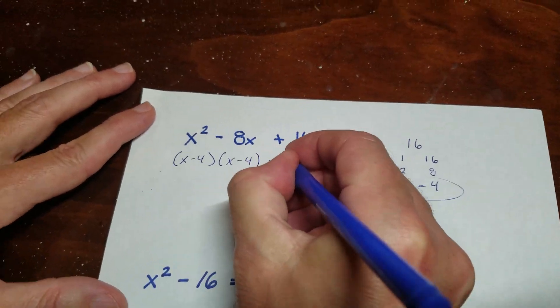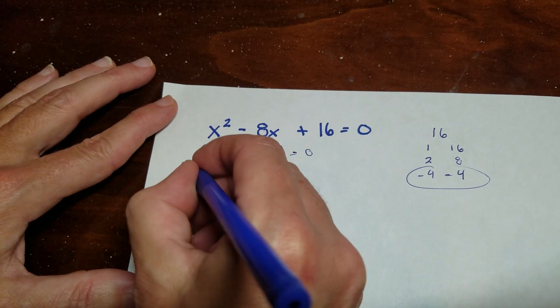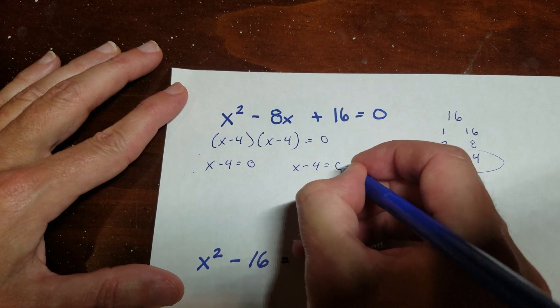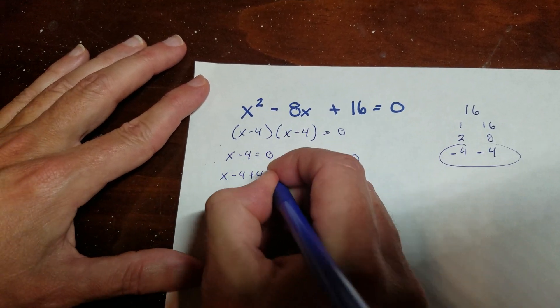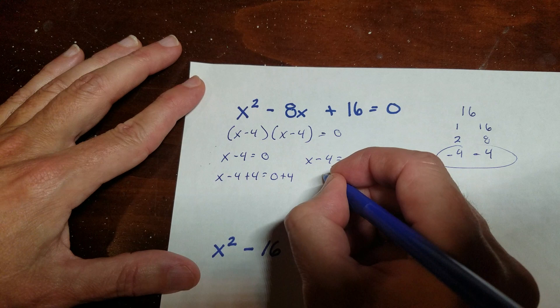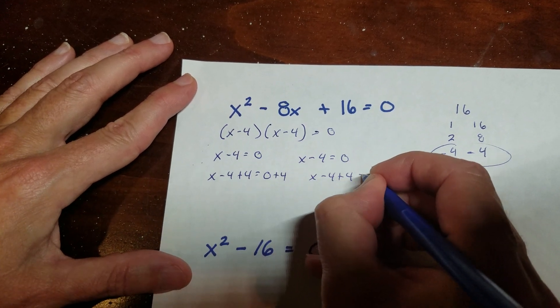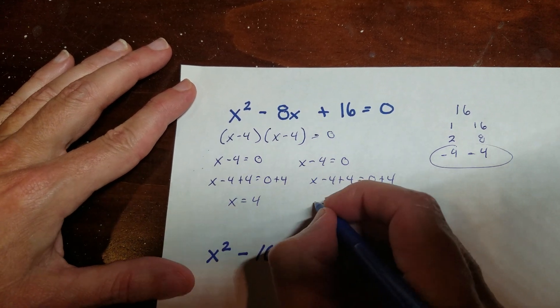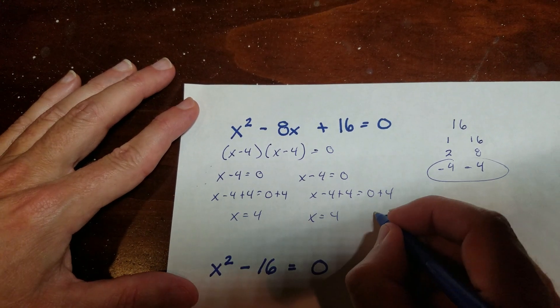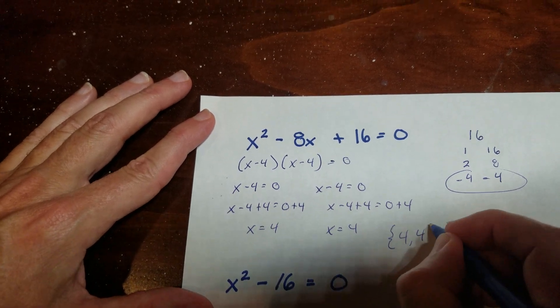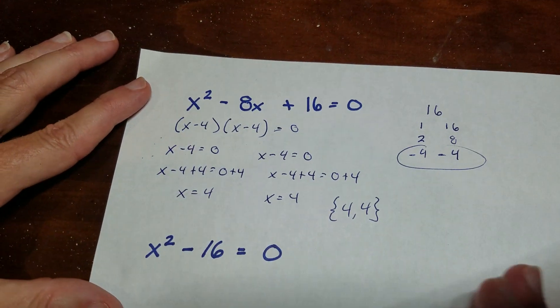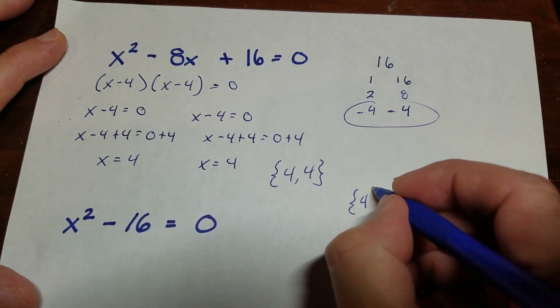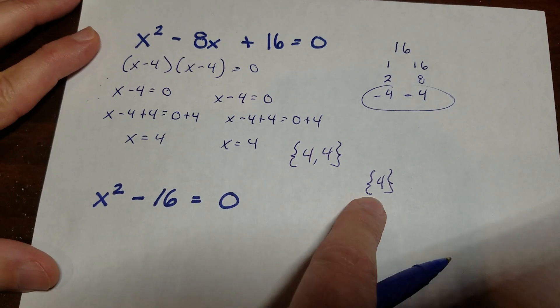And so what does that mean? Well, what happens is with a perfect square is you end up with two equations. And since both equations are exactly the same, you end up with two answers that are exactly the same. You can see I'm doing the work side by side here. So I get x is equal to 4 and x is equal to 4. Do I write it as 4, 4? No. There's only one number 4. So if you do a perfect square, what you can expect is your answer will just be a 4. You don't write it like this. You write it like this.